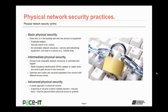Then there's intermediate physical security, where access to all vulnerable network resources is controlled and logged. One way to implement this is to use RFID badges to gain access, or you could implement cipher locks that require people to punch in a code to unlock the door. Another step in intermediate physical security is the separation of resources — switches and routers are secured separately from servers, with different access levels for each.